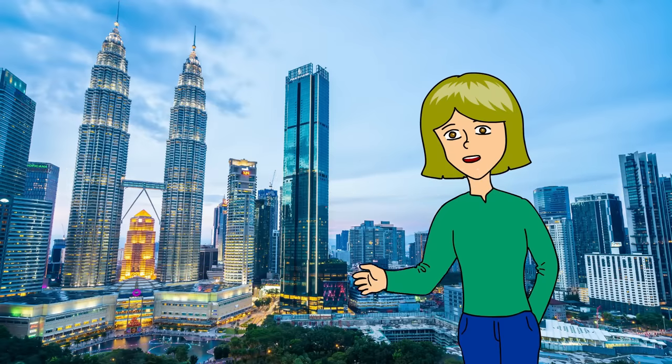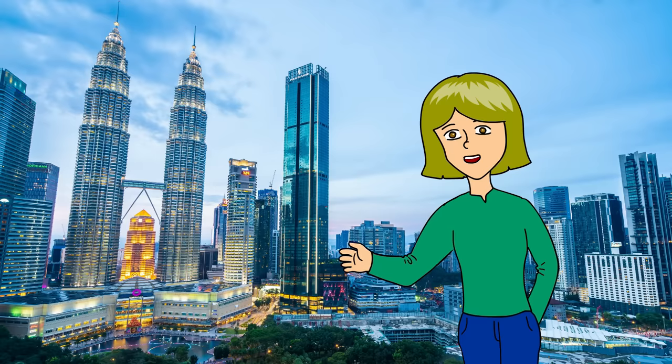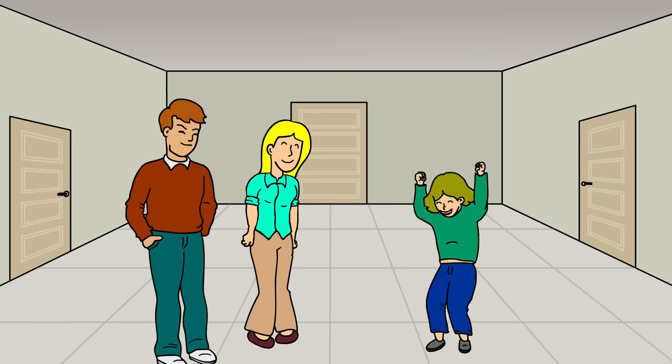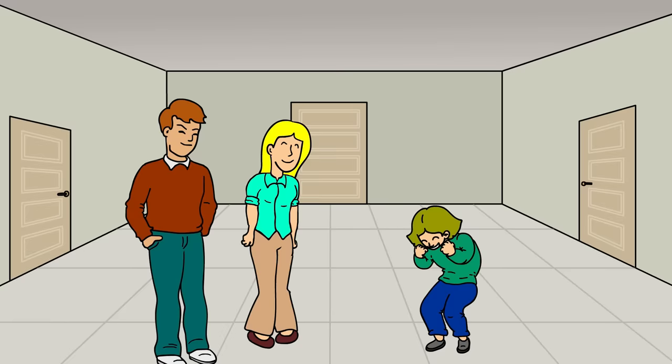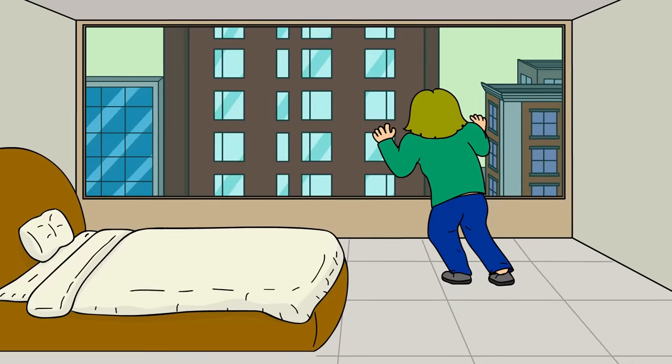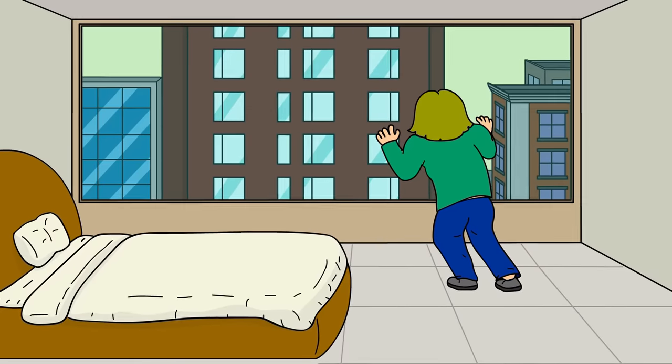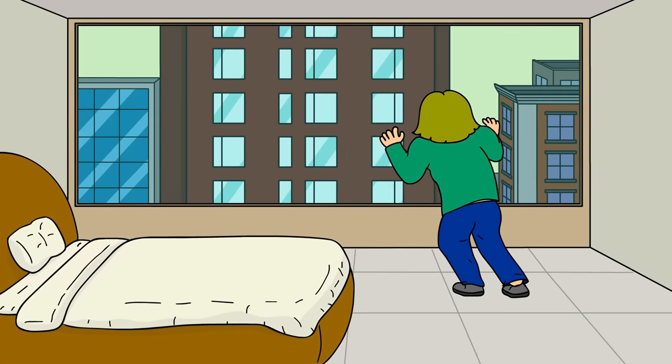This incident happened to me before I moved to the U.S. I'm from a beautiful city called Kuala Lumpur in Malaysia. When I was around 12 years old, we moved to a new apartment. It was bigger than our previous one. It had three bedrooms, and I was so happy I finally got my own personal room. But I also loved my parents' room, because they got a huge window with a beautiful view of the city.